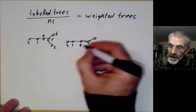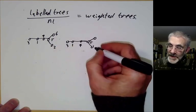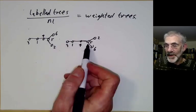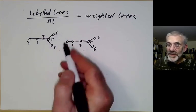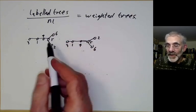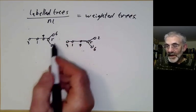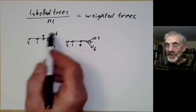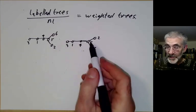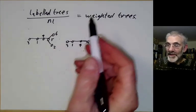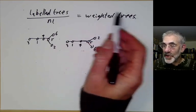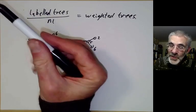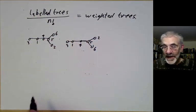The reason is that this tree has a symmetry group of order 2, which means that to get the number of trees from the number of labeled trees, you have to divide by the order of the symmetry group. If you think about this, you see that counting weighted trees is the same as counting labeled trees and dividing by n factorial, where n factorial is the number of ways of permuting all the labels.